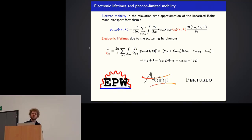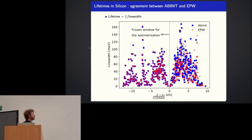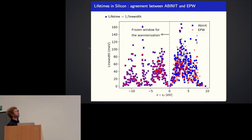There is also Perturbo, which uses atomic orbitals instead of Wannier functions to perform the interpolation, but this is not openly available. So we decided to have our own implementation in Abinit using plane waves — we don't need Wannier functions or atomic orbitals to compute the lifetimes. In this slide I compare the linewidth, which is just one over the lifetime, in silicon in the valence band and in the conduction band computed with Abinit and with EPW.